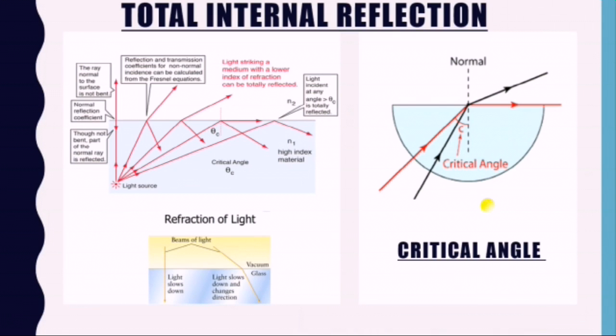Total internal reflection. A ray of light emerging from glass into air is refracted and bends away from the normal. In this case, i will be less than r because it travels from a denser medium to rarer medium. We notice that the ray which is normal to the surface is not bent as we have already studied in the last lesson. Some of the rays are reflected back as well.